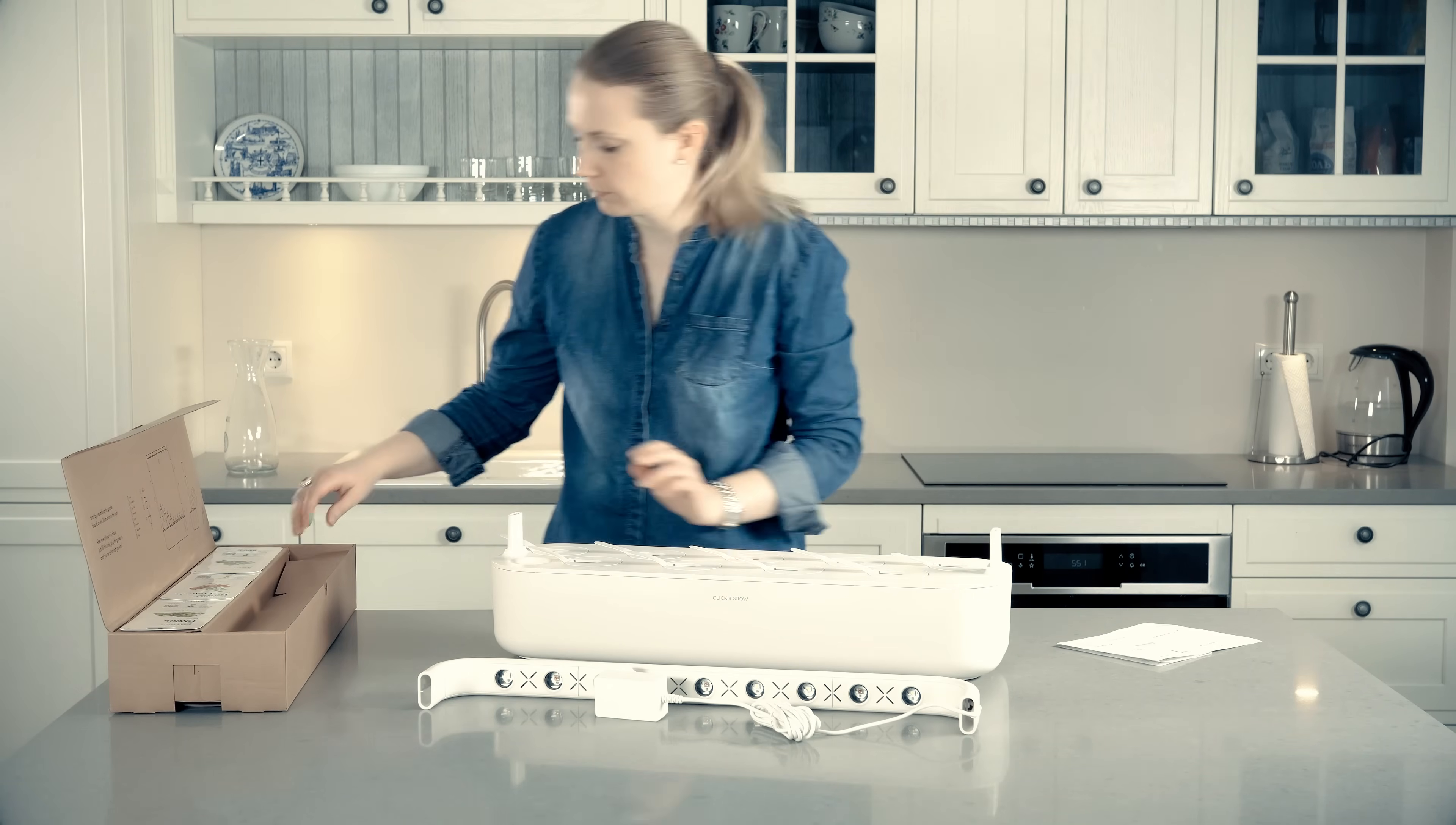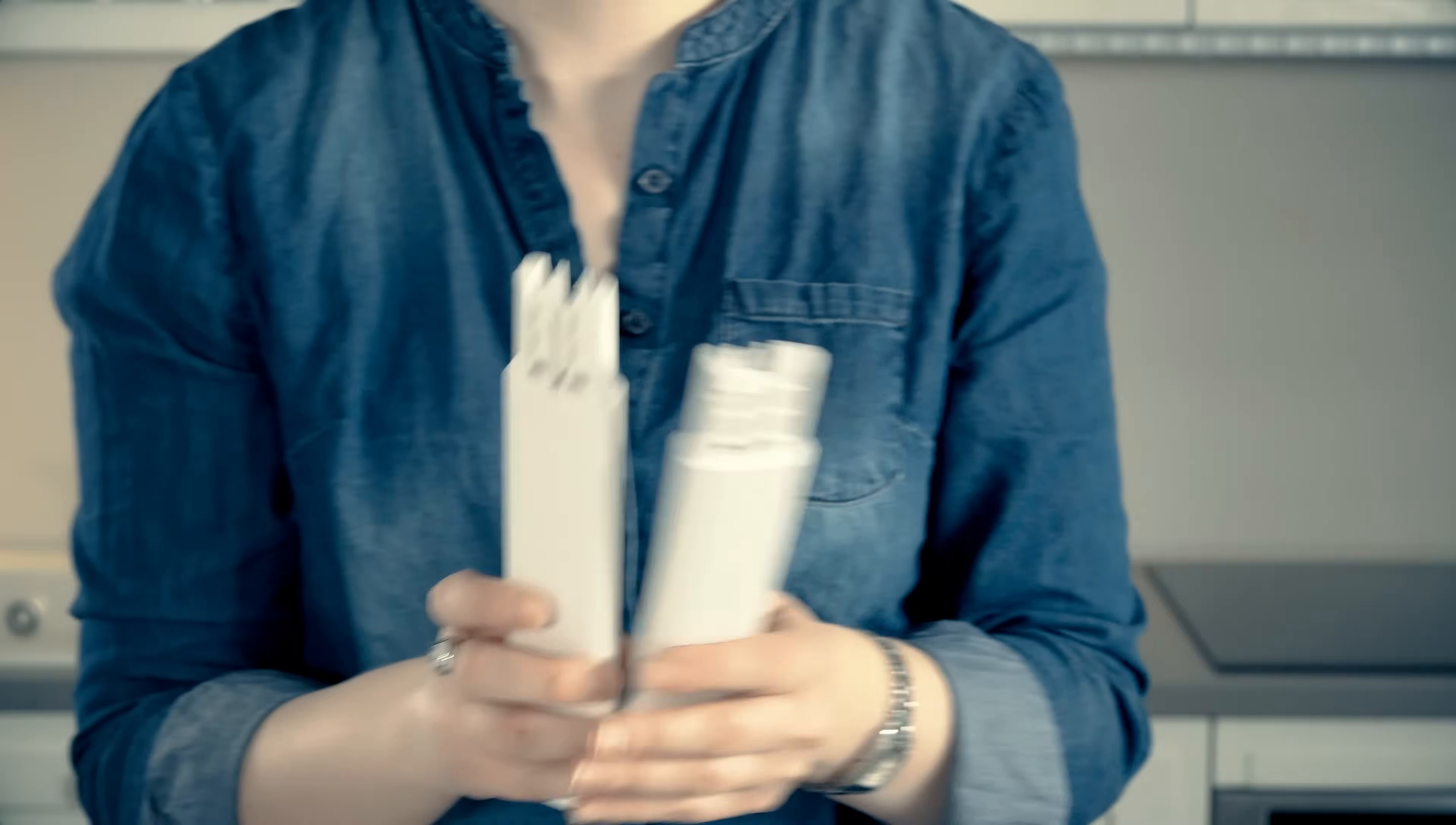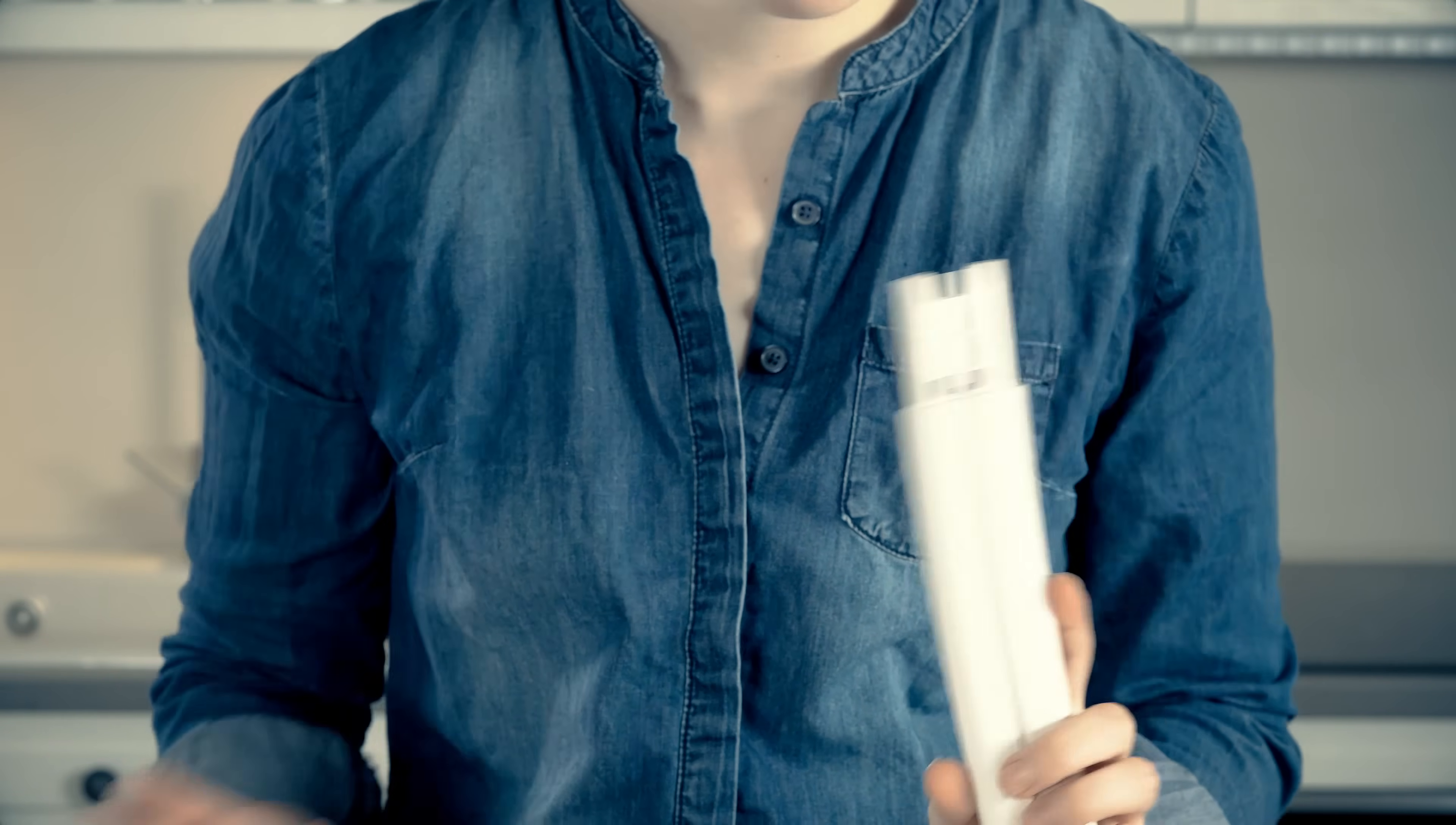Unbox the components and start with assembling the lamp by adding the provided lamp arm extensions. Notice that there are two types of extensions. One extension type has a narrow groove in it that fits the power cord later on.